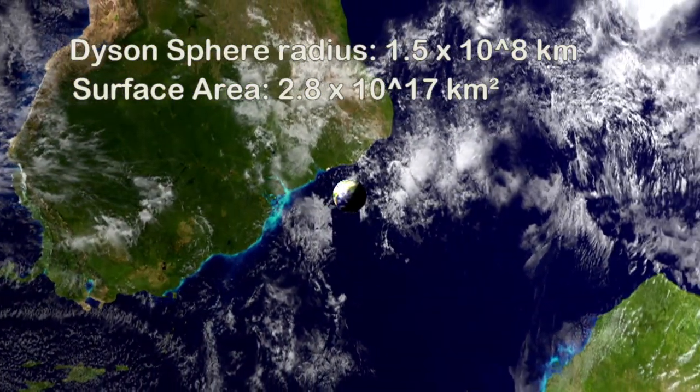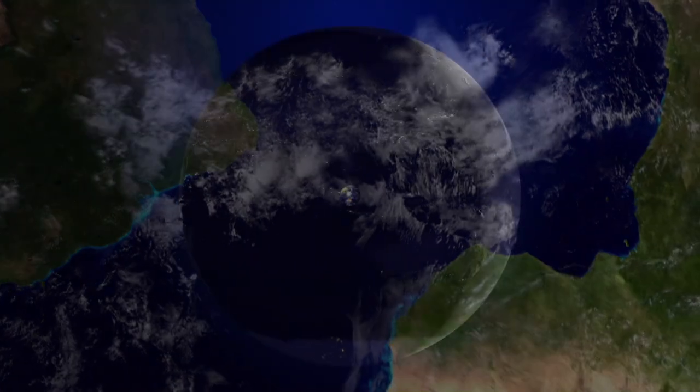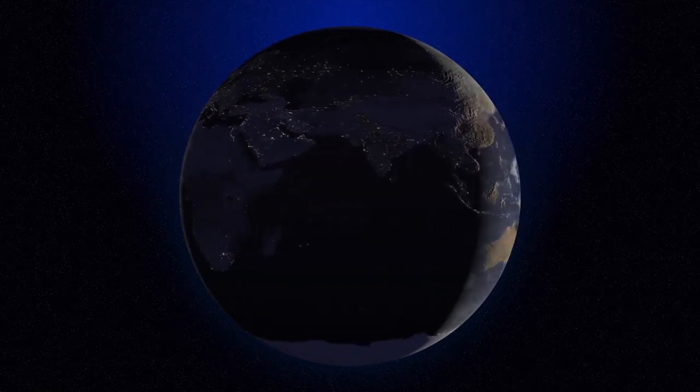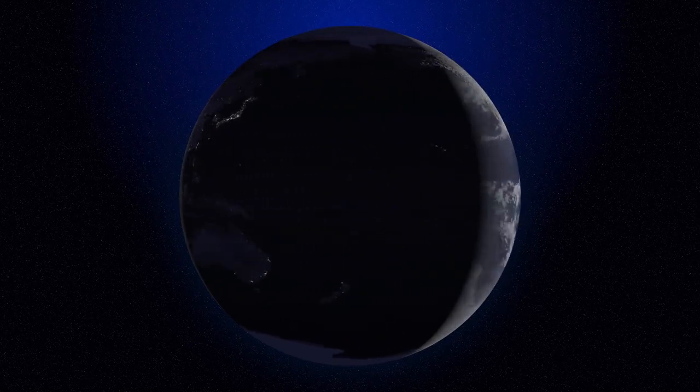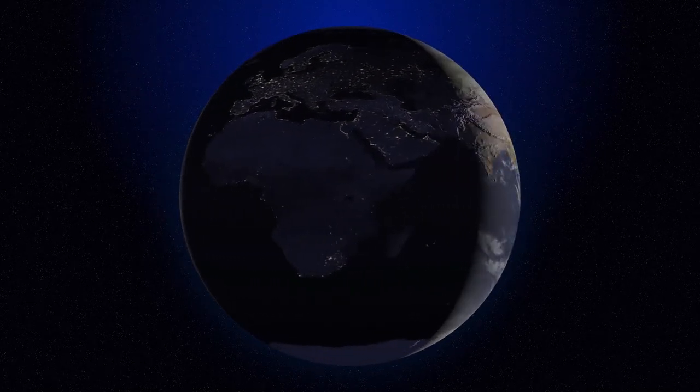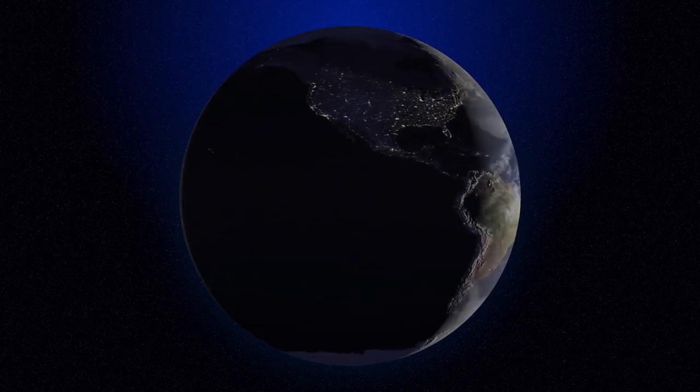But it is actually 2.2 billion times as much area because the Earth receives an amount of sunlight based on its cross-section to the Sun, pi times the planet's radius squared, but has a surface area of 4πr². Only half the planet is lit at any time and most of it is angled off from the Sun, not perpendicular to its light.